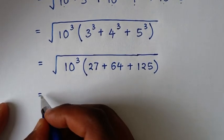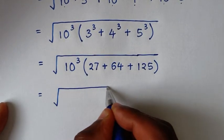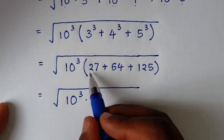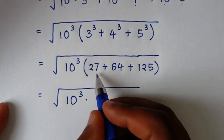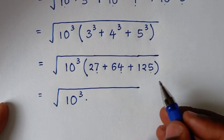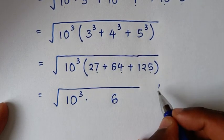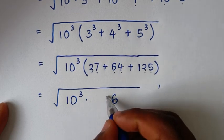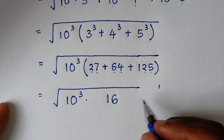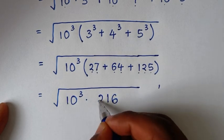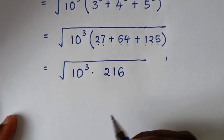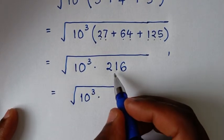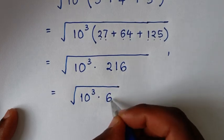Then in the next step, it will be equal to the square root of 10³ times the sum of 27 plus 64 plus 125, which equals 216. And 216 is 6³.